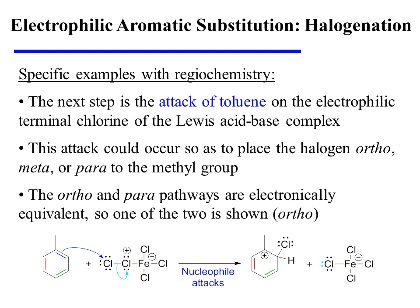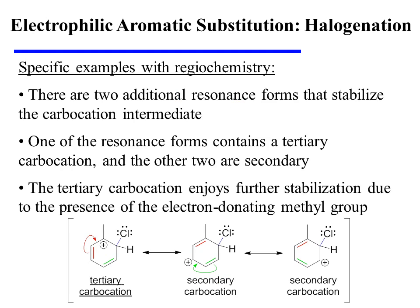This attack could occur so as to place the halogen on the ortho-, meta-, or para-positions relative to the methyl group. The ortho- and para-pathways are electronically equivalent, so let's consider just one. The attack that yields an ortho-sigma complex is shown here, with two additional resonance forms stabilizing the carbocation. Notice that one of the three resonance forms contains a tertiary carbocation; the other two are only secondary. The tertiary carbocation enjoys further stabilization due to the electron-donating methyl group.